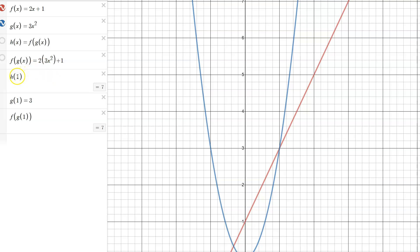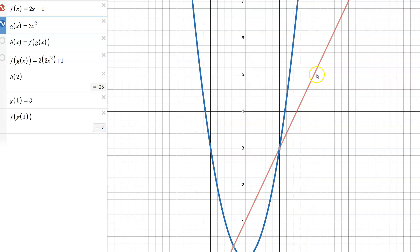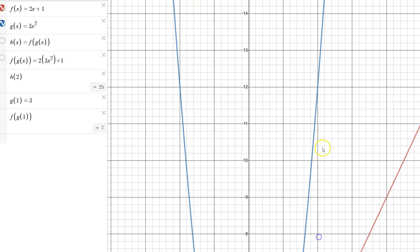If we did this again for x equals two, so h of two, the composition of f and g spits out an output of 25. Why is that? Well g of two, it's going to be quite a bit larger. We come over to x equals two and we chase up and see what g's value is, well it's going to be 12.